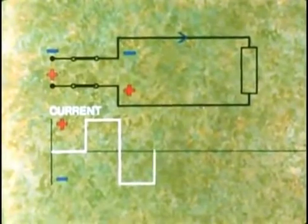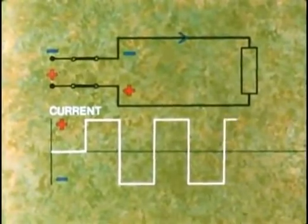Every time the current reverses, the graph moves to the other side of the line. This is a waveform of a simple alternating current.